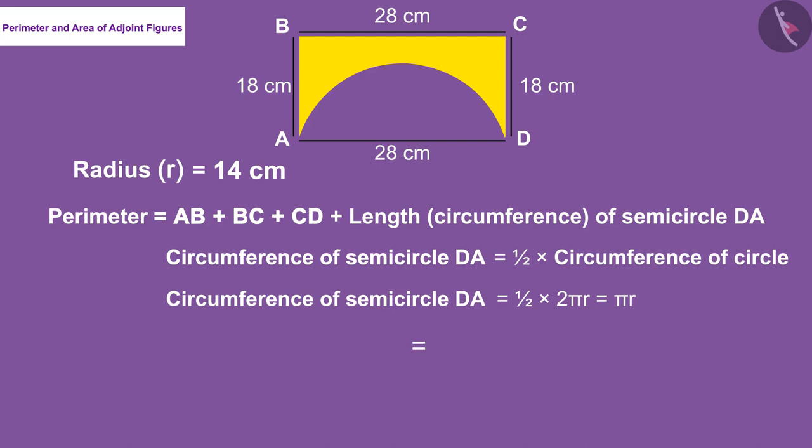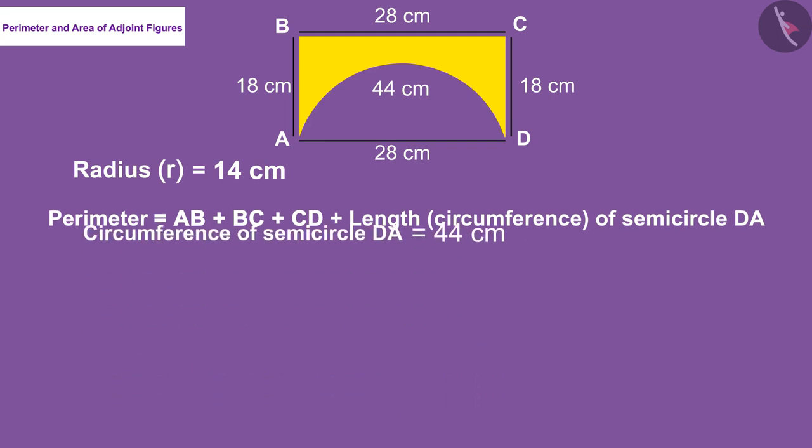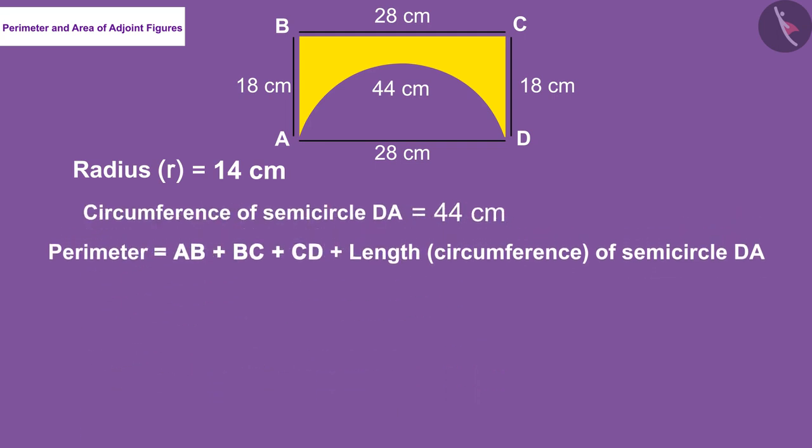Now let's substitute the values. Now let's find the perimeter keeping the circumference of the sides and semicircle. Therefore, the value of the perimeter of yellow figure is 108 centimeter.